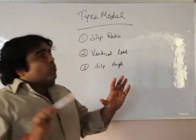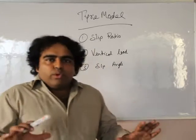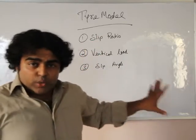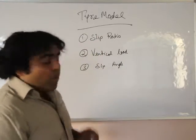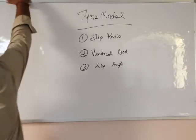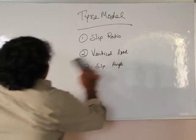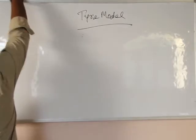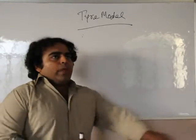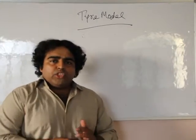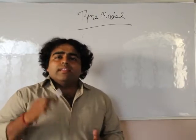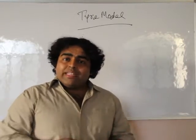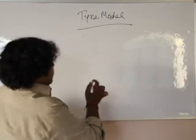Right now, if we are talking about only the braking force, then we just have to consider two factors: slip ratio and vertical load. So what actually is slip? When you are driving your vehicle, there is only a certain amount of slip, and this graph is going to explain what that slip does.